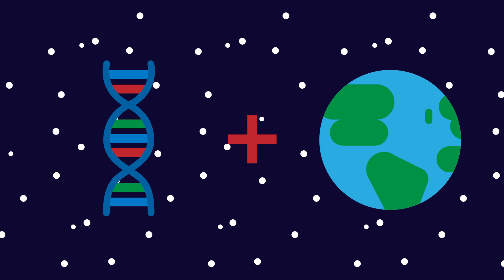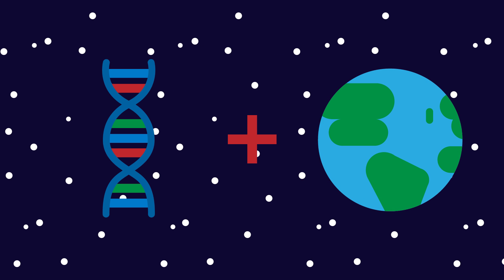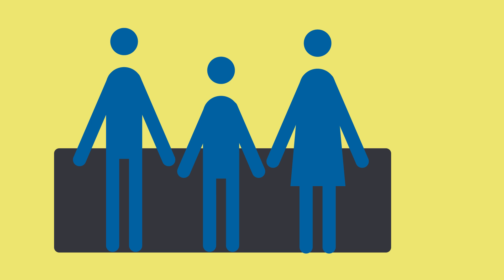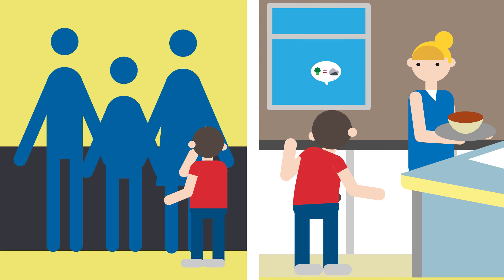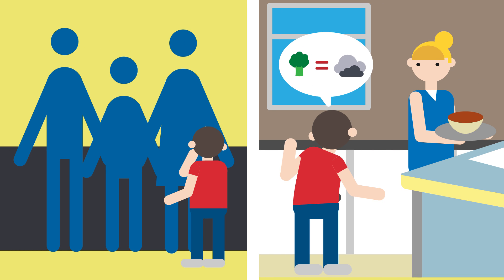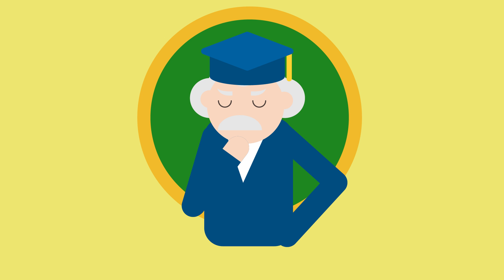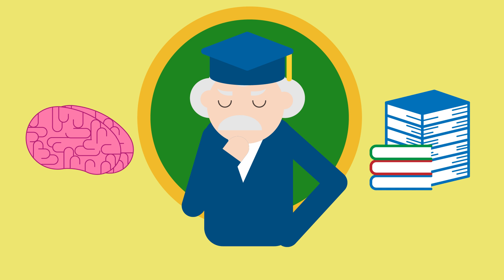Many characteristics are due to a combination of both genetics and the environment. For example, the height a person can grow to is determined by genetics — tall parents tend to produce tall children. However, a person will not grow to their potential height unless they eat a healthy, balanced diet. Also, there is some debate on how much intelligence is due to genetics or the quality of education a person receives. Is intelligence more due to nature or nurture?